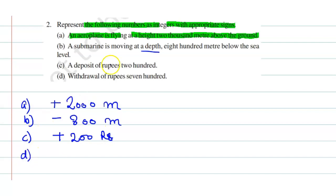And part D is, withdrawal of rupees 700. So withdraw ke liye hum use karenge negative sign. Negative 700 rupees.